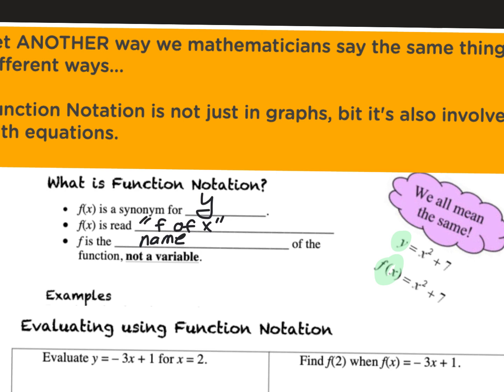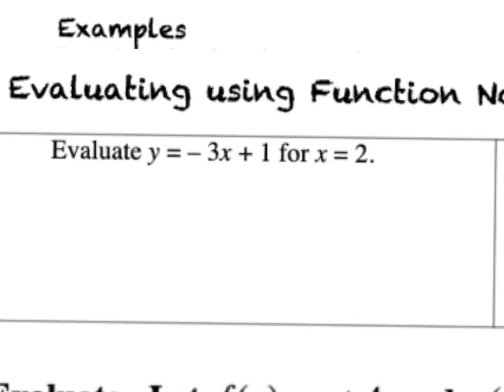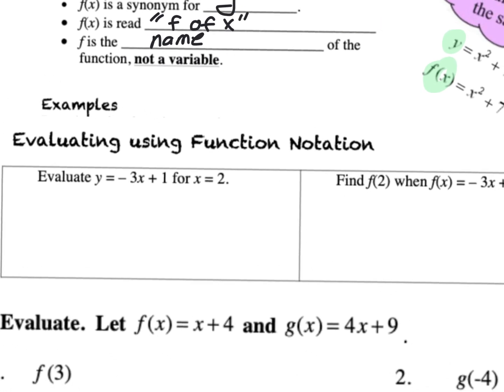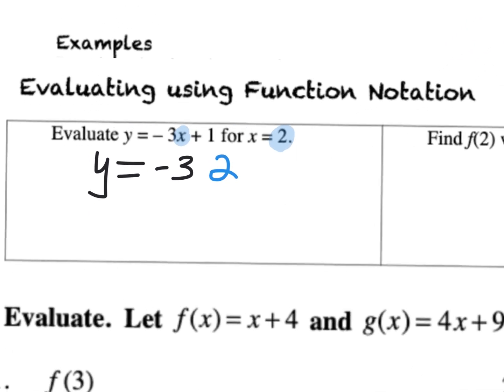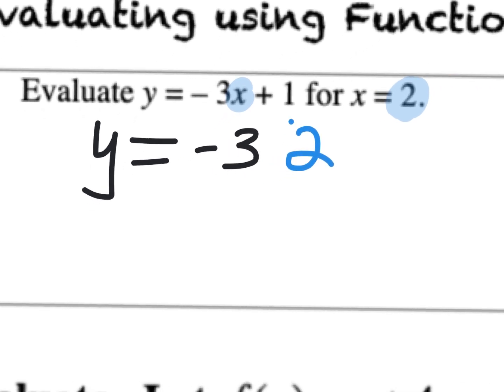Even though the notation itself looks confusing because it takes familiar things and makes them mean different things, the actual problems are very easy. So this is what you're used to seeing. If Y equals negative 3X plus 1, it'll say you take the 2, put it in for X, and solve for Y. Instead of Y equals negative 3 times X, I'll replace that X with the number 2. What does it mean when you've got it sitting next to something else? Multiplication.